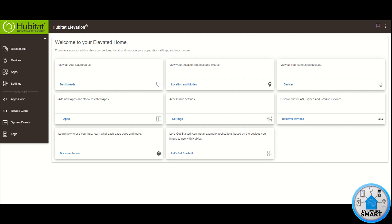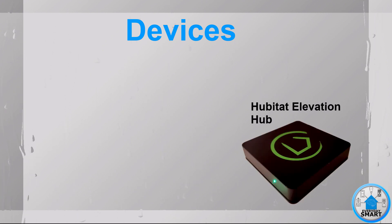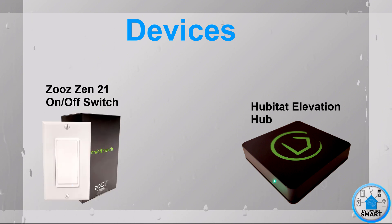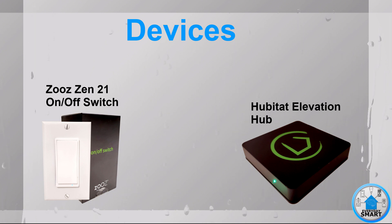The button that we're going to be using is from a switch. Let's review real quick the devices we're going to be using. As usual we're going to be using a hub — in this case Hubitat — and for devices I'm going to be using this Zwave smart switch which also has the capability for scene controlling.